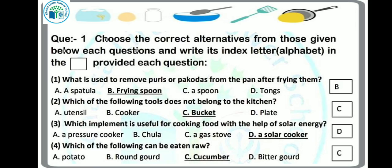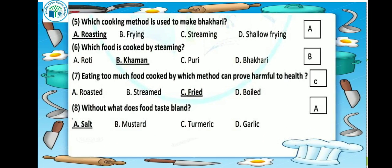Next question: which cooking method is used to make bhakri? For bhakri, we use the roasting method — we take a little oil and roast it. So our answer will be option A. Next question: which food is cooked by steaming?